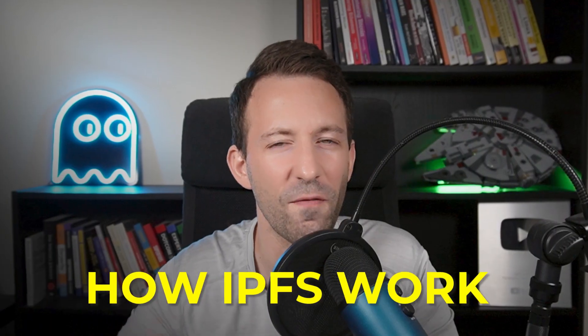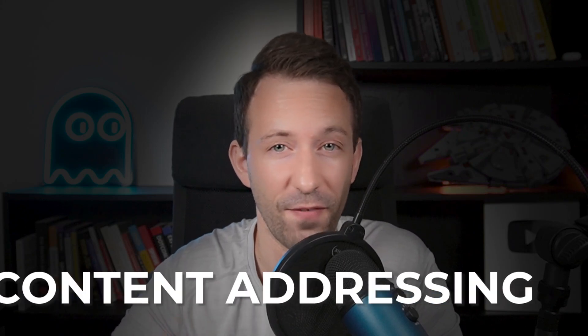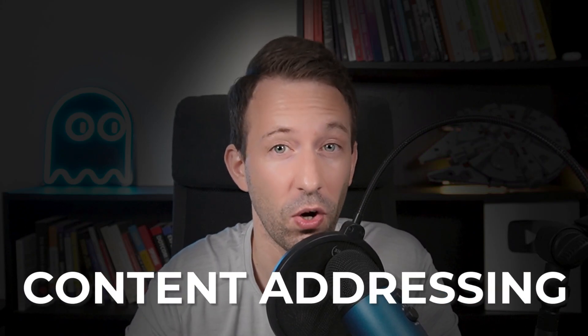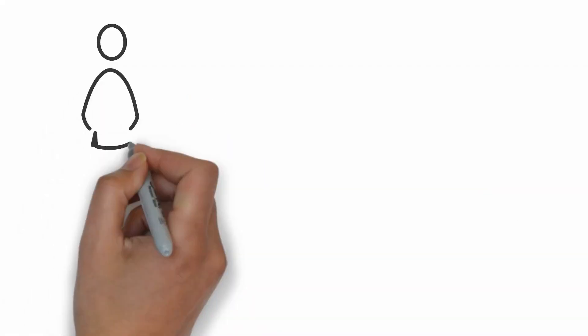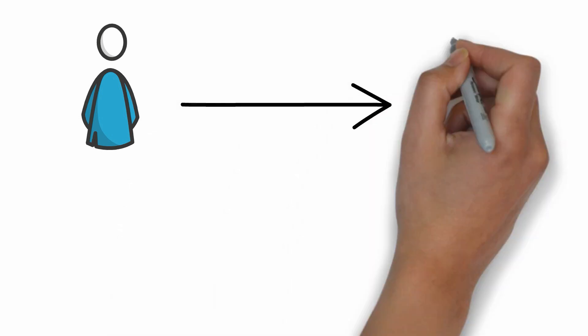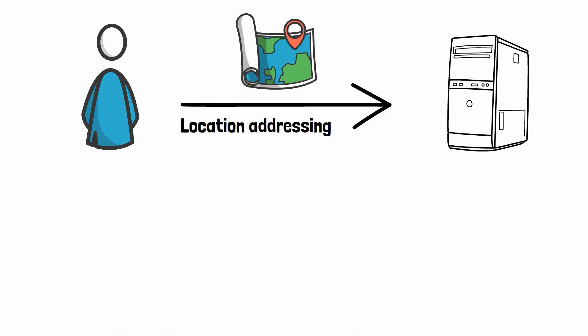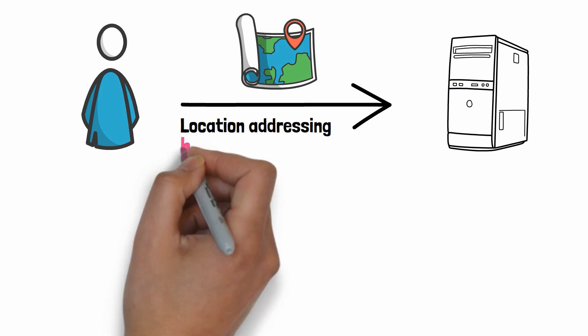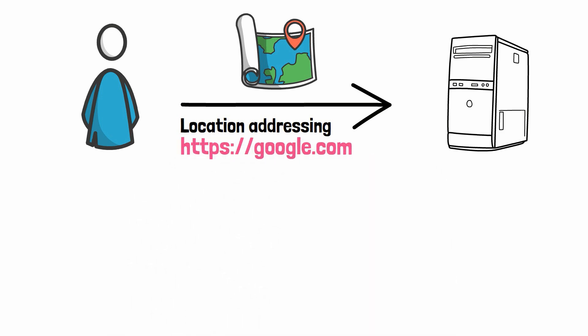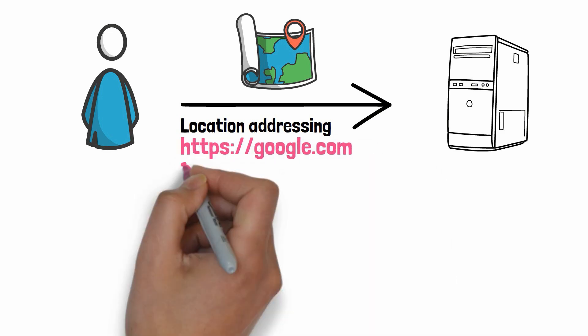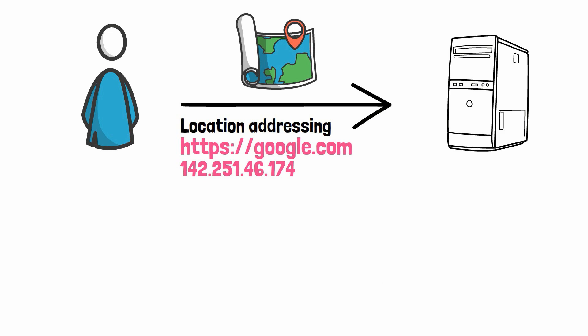Now we're going to focus on how IPFS works, starting with something very important called content addressing. On the internet, when you want to access a website, you say: hey internet, give me the resource at this location. You specify the location, not the resource. That's what we call location-based addressing. Technically, we use a URL that maps to a location — the IP address. But on IPFS, it's different.